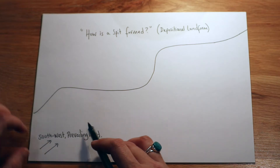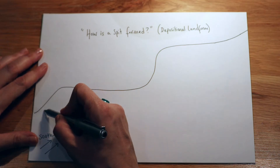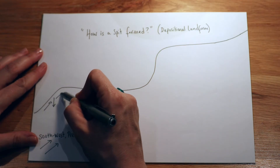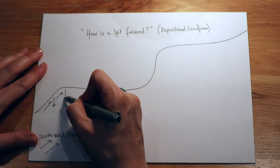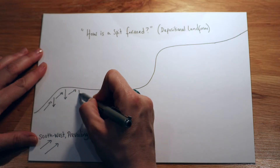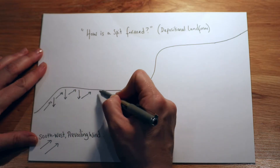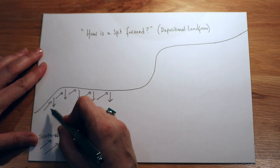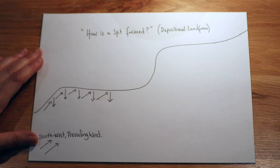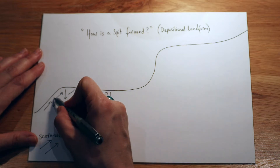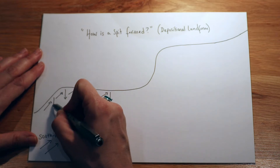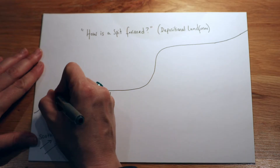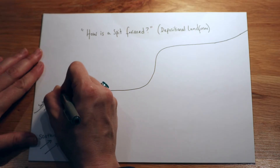This southwest prevailing wind causes something called swash to happen on our shores, and then a resulting backwash. Swash and backwash. Swash is the one that's going at an angle to the beach, and backwash is it coming back down straight due to gravity.